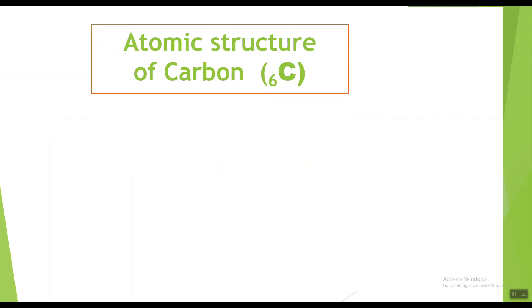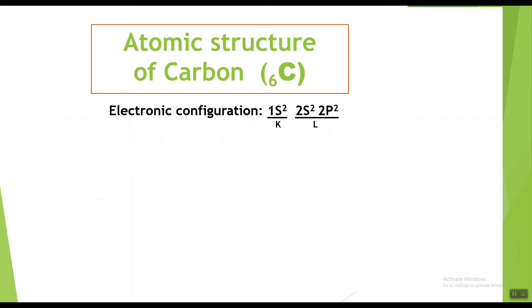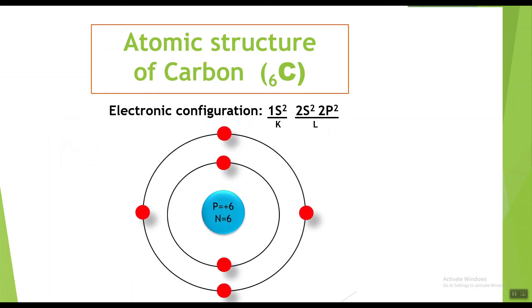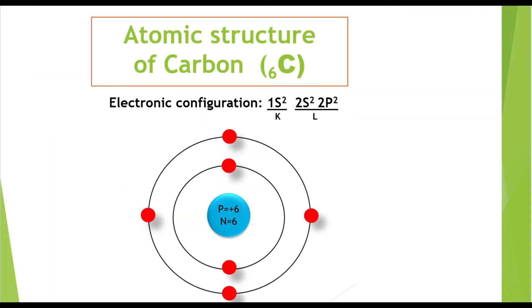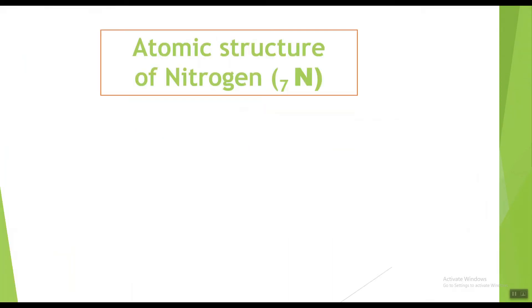Now carbon. The symbol for carbon is C with atomic number 6, showing it has six electrons. The electronic configuration of carbon is 1s2 2s2 2p2, showing two electrons in the K shell and four electrons in the L shell. The atomic structure of carbon shows six protons and six neutrons in the nucleus, with two electrons in the K shell and four in the L shell.